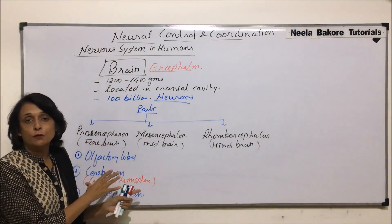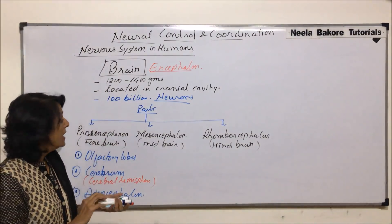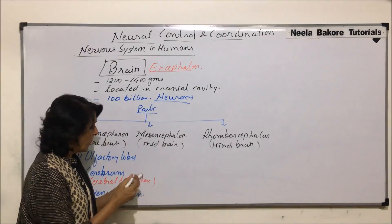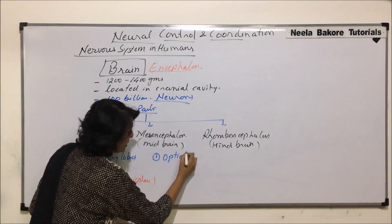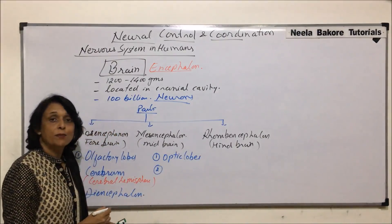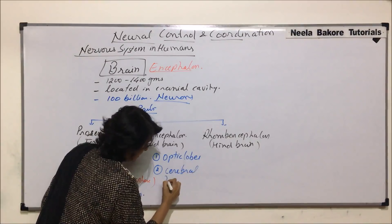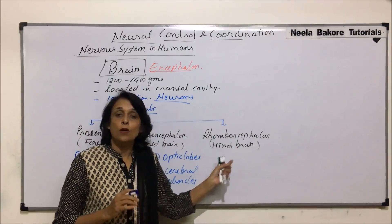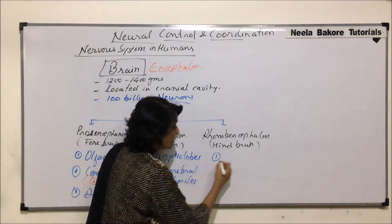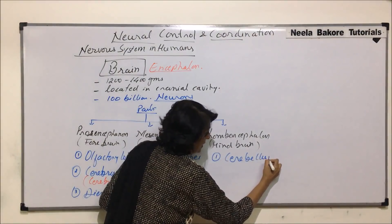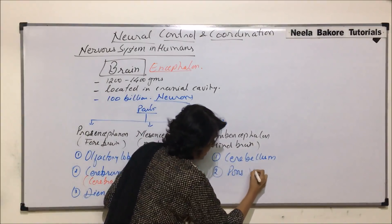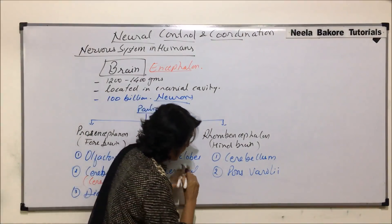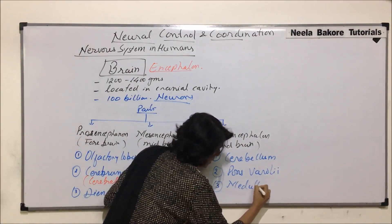The forebrain makes the biggest part of the brain, and out of which cerebrum is the largest part. Midbrain is small and more or less covered by the cerebrum. It has two parts: optic lobes and cerebral peduncles. Rhombencephalon or hindbrain is also made up of three parts: cerebellum, pons varoli — many times written simply as pons — and medulla oblongata.